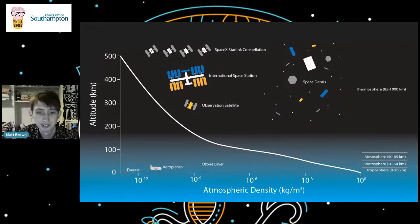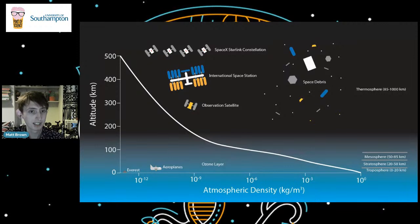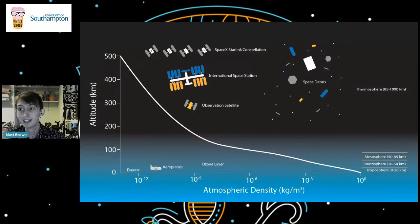First of all, space isn't a complete vacuum. As we go up in altitude, atmospheric density drops down very quickly to about 100 kilometers, then tails off further. Everest, at about eight kilometers high, is 50 percent less dense than at ground level. The space station is a million million times less dense. All the space debris and satellites orbit in the altitude range of around 300 to 500 kilometers, and there's material even above that which we still consider space.